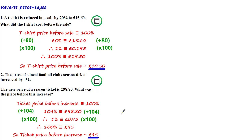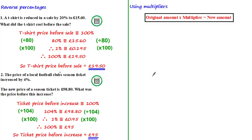Now an alternative way that we could have solved both of these problems is by using multipliers. Remembering from previous tutorials that we use multipliers to increase or decrease amounts — given the multiplier and the new amount, we can use the equation: the original amount times by the multiplier equals the new amount, to work out the original amount.